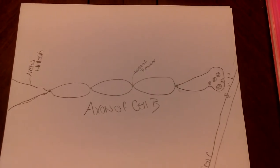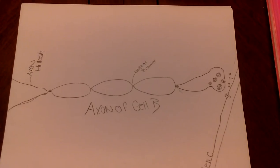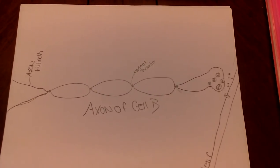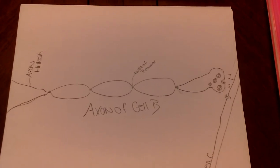Once the action potential reaches the end of the axon terminal, the calcium ion enters the cell and signals the movement of the vesicles containing the neurotransmitter molecules to the edge of the presynaptic membrane of cell B.